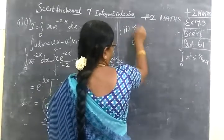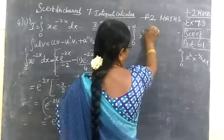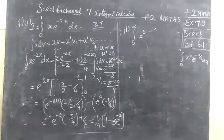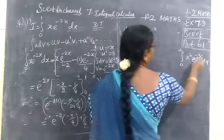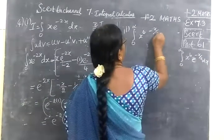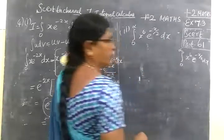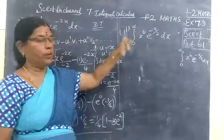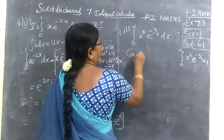The question is: integral from 0 to infinity, x power 6 times e power minus x by 2, dx. This limit is 0 to infinity. We are using gamma integral.